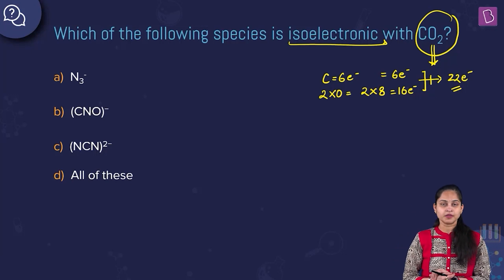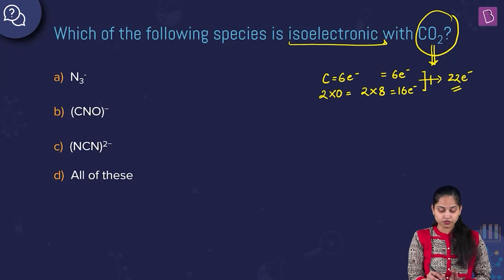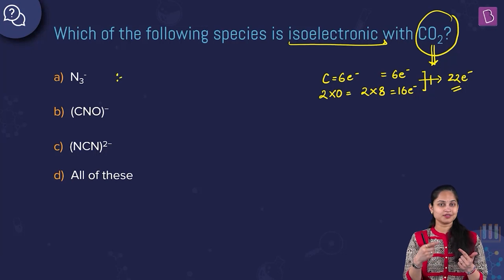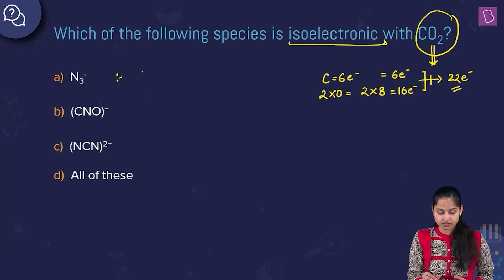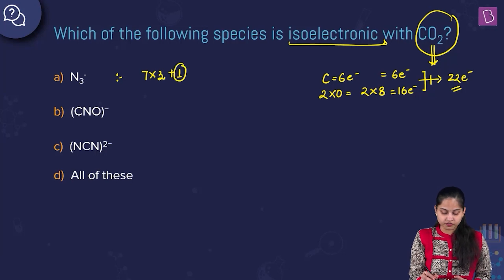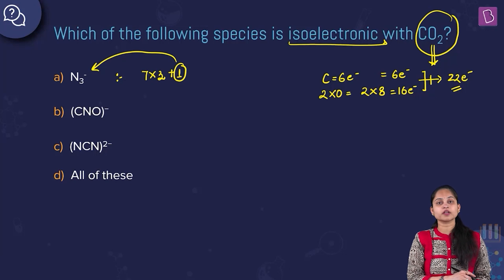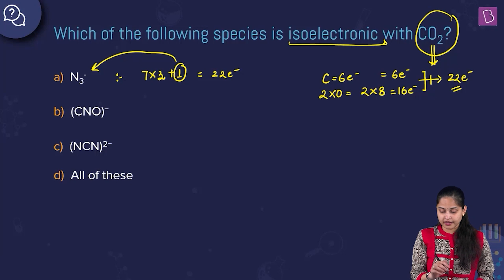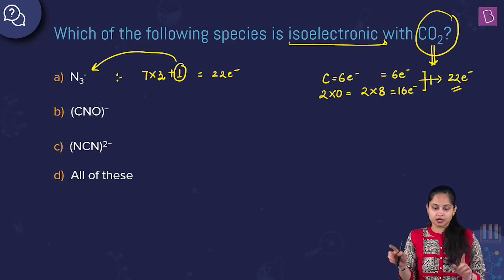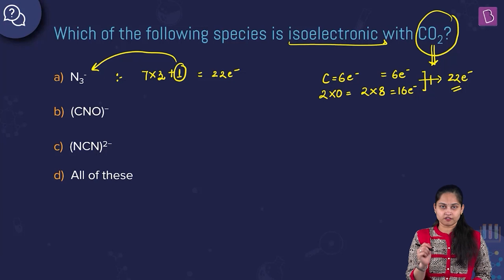For the azide ion (N₃⁻), we have three nitrogen atoms. One nitrogen atom contains 7 electrons, so 7×3 plus 1 (for the negative charge) equals 22 electrons. That means the azide ion is isoelectronic with carbon dioxide.